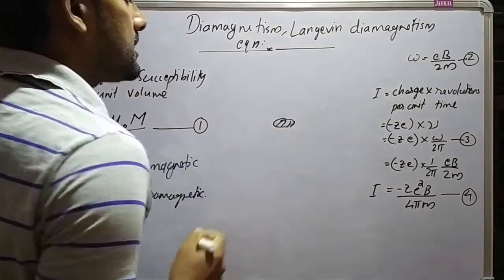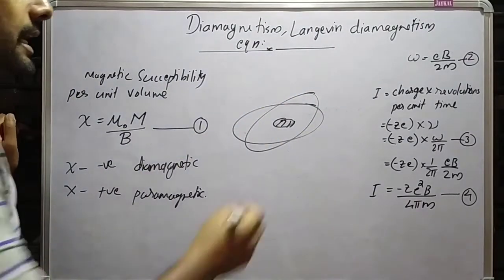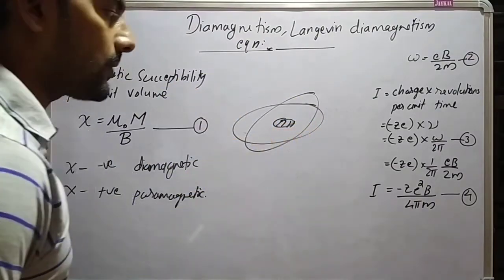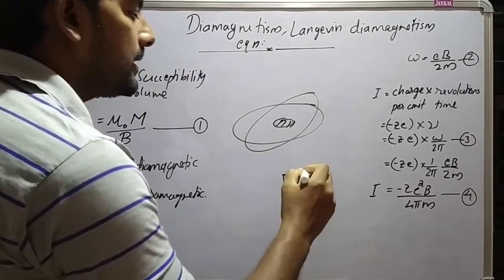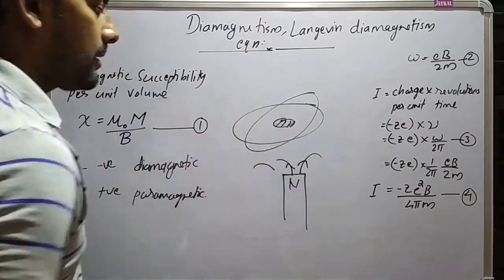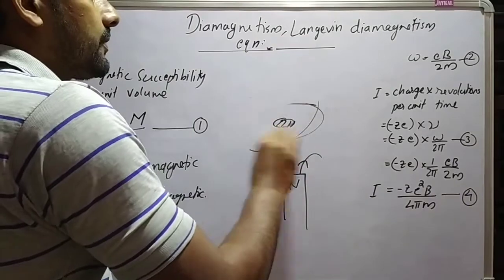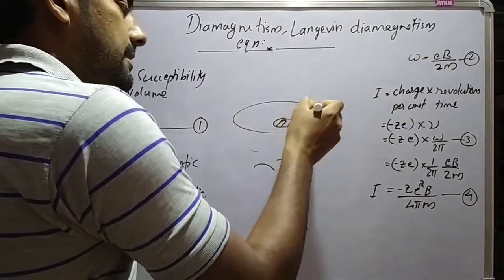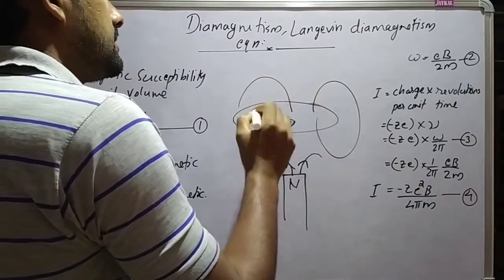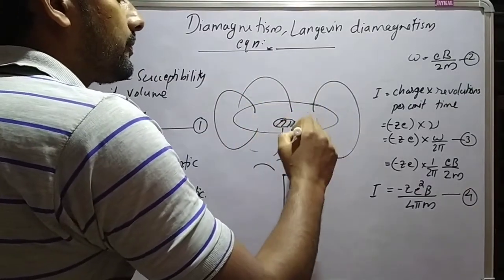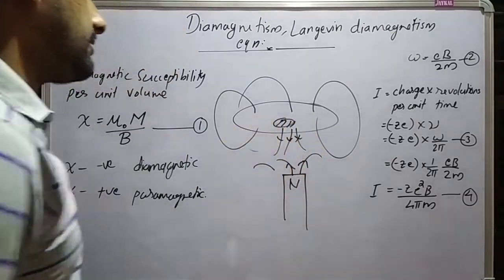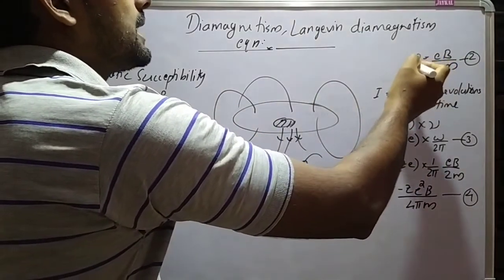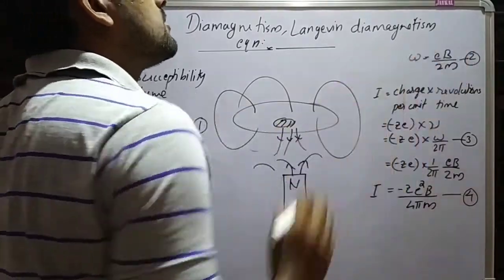An atom consists of a central nucleus and electrons revolving around it. In the absence of an external magnetic field, the average electron current around the nucleus is equal to zero. But when we apply an external magnetic field, a current loop forms around the nucleus such that it creates a magnetic field which opposes the external magnetic field. This is the property of diamagnetic materials.